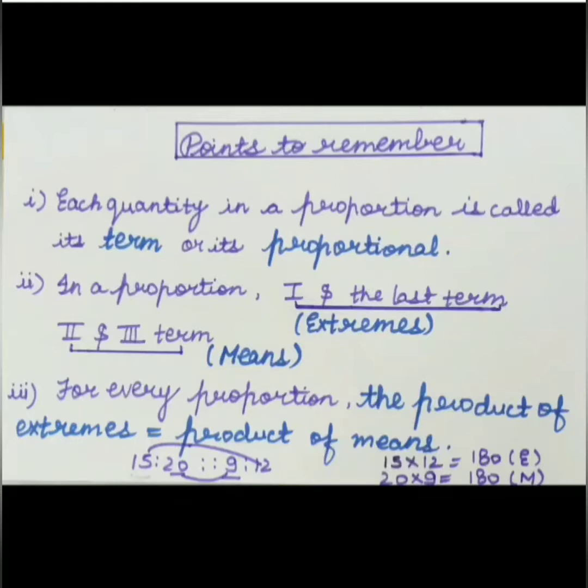Second one: in a proportion, first and the last term, that is first and the fourth term, is called extremes, and the second and third term is called means. This point will become clear with the help of a third one.